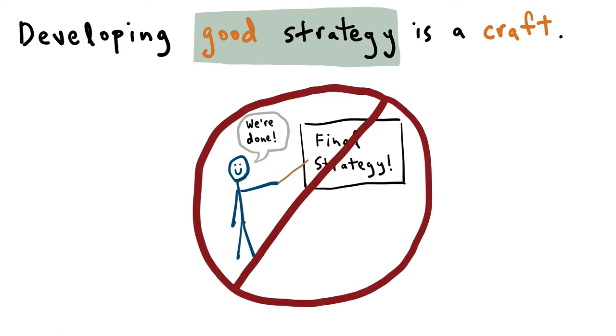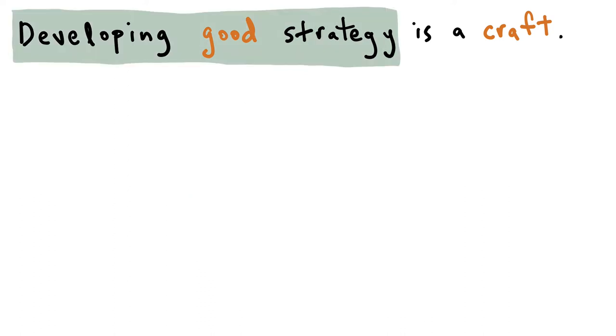This is the biggest mistake groups make when it comes to strategy: they develop one and they think they're done. To actually become more strategic, you have to constantly revisit and refine your strategy.